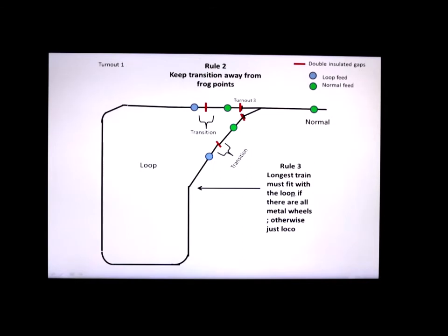Rule number three. The longest train must fit within the loop if there are all metal wheels. The reason for that is that you could have the front end of the loco at this end of this part of the transition and you could have the rear end at this transition point here. So the auto reverser gets confused when it sees a short at both sides and doesn't know what to do. As I would get confused as well. So if you have a train with all metal wheels, you have to take that in consideration. If you just have all plastic wheel sets, then just the loco has got to fit in the loop. So that's not a big deal.